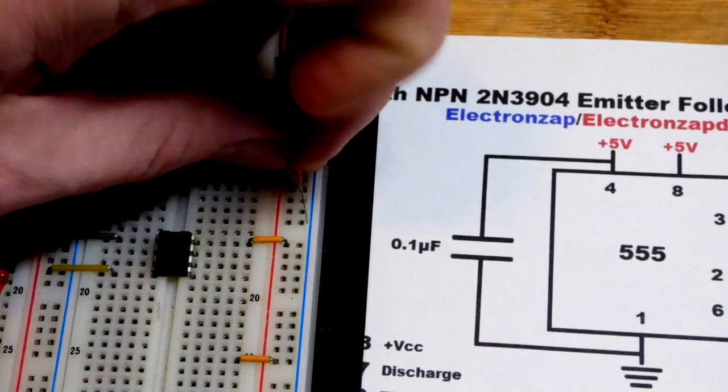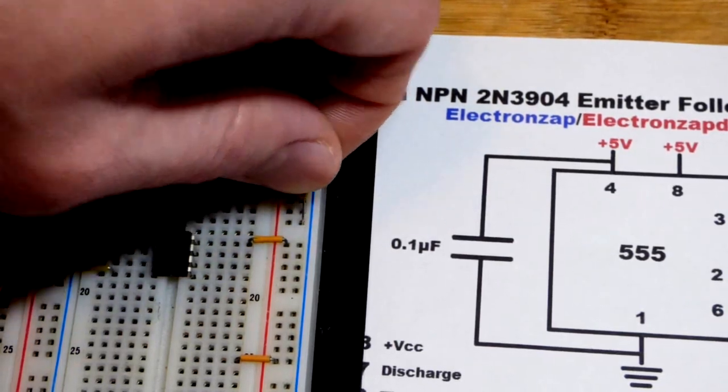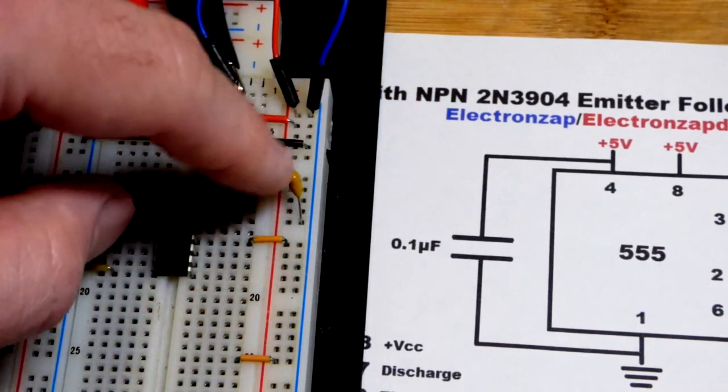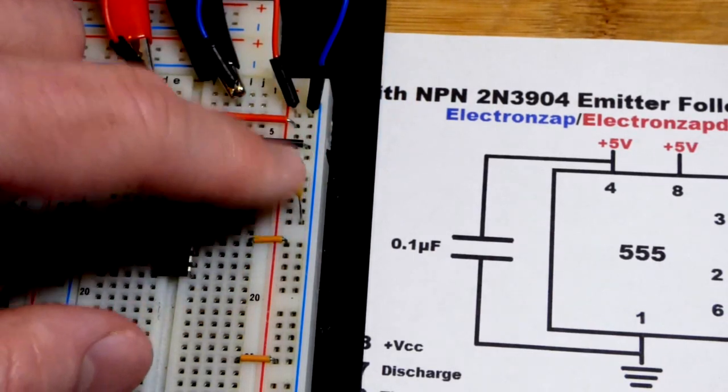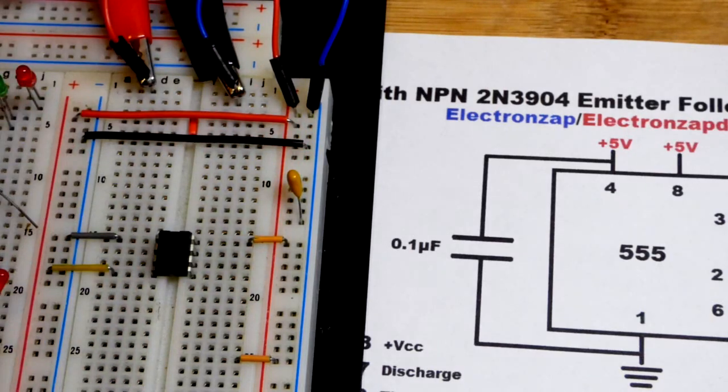If the 555 timer suddenly needs a little more current than the power supply is providing, it can get a little bit of that current from the capacitor. The capacitor will help hold the voltage at the rail.